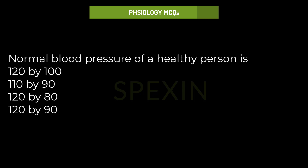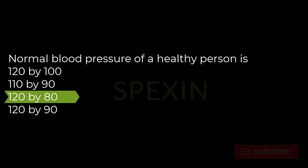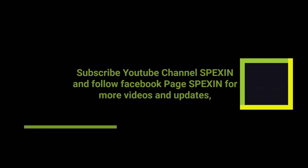Normal blood pressure of a healthy person is: 120/100, 110/90, 120/80, 120/90. Correct answer: 120/80.